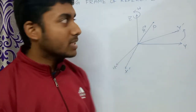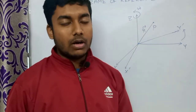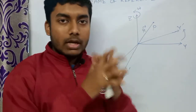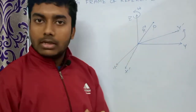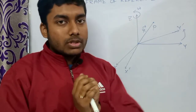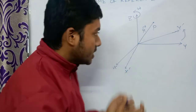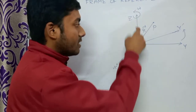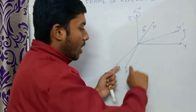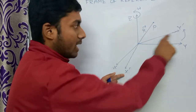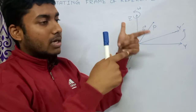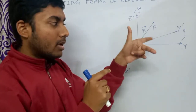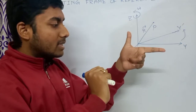Hello friends, welcome to Truth of Physics. Today in this video I will discuss the rotating frame of reference and derive the expression of centrifugal and Coriolis force in a rotating frame of reference. Suppose we have a fixed frame of reference: X, Y, and Z coordinate system, and another coordinate system which is rotating with its Z axis fixed with the original static frame, and the X and Y axes of the new reference frame — X dash and Y dash — are rotating.